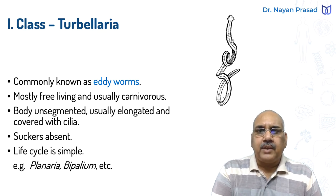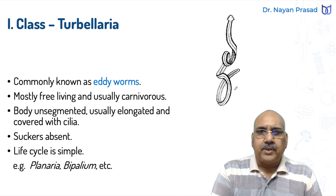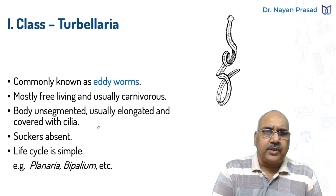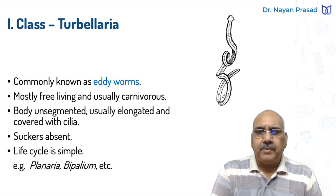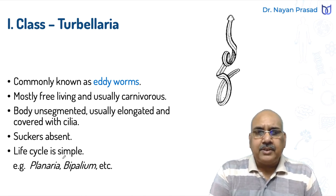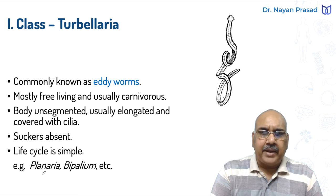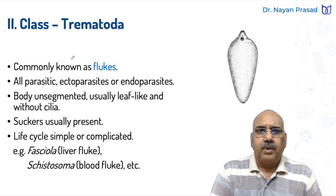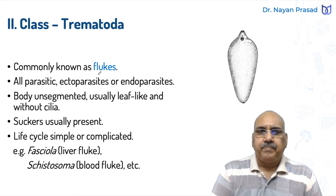The body is unsegmented, usually elongated, and covered with cilia. In Bipallium we see the body unsegmented - not divided into different segments. Fine hair-like structures called cilia are all around the body. As they are free living, suckers are absent and the life cycle is simple. Common examples: Planaria and Bipallium.